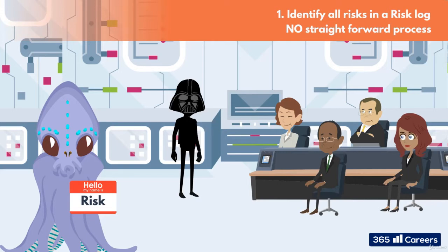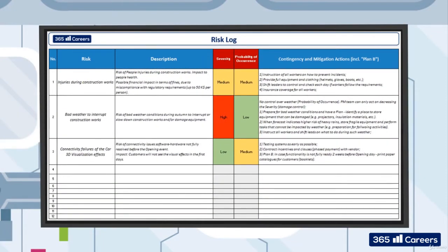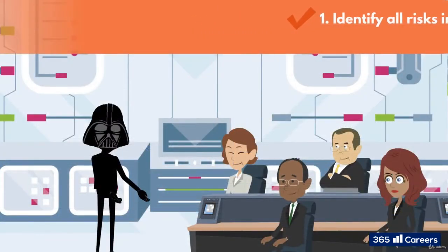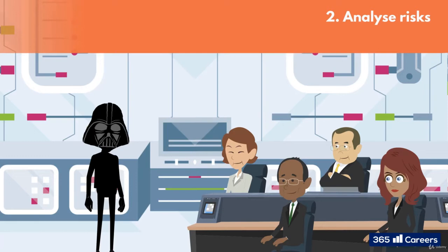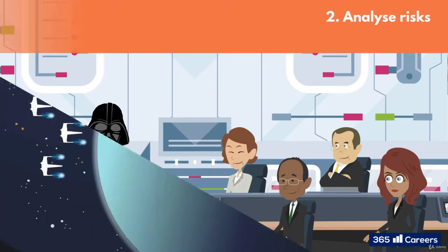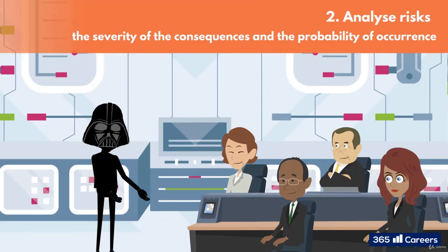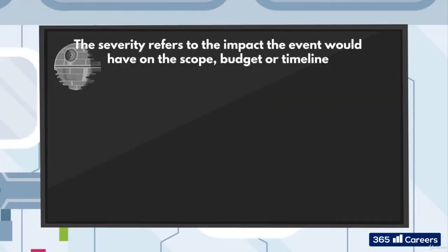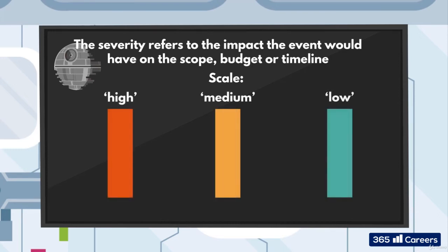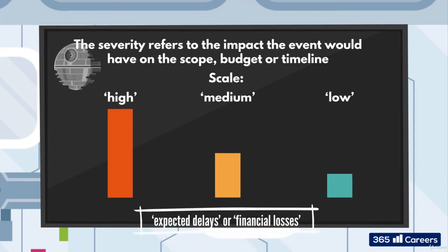The risk log will look something like this. Now once the risks have been identified, the next step is to analyse them. We can do this by reviewing two dimensions: how bad can it get if the event happens, and how likely is it that the event actually happens? In other words, the severity of the consequences and the probability of occurrence. The severity refers to the impact the event would have on the scope, budget or timeline, and to what degree the project activities are exposed to such an event. We record the severity with a scale — a simple one would be high, medium and low, but could be translated to something as specific as expected delays or financial losses.